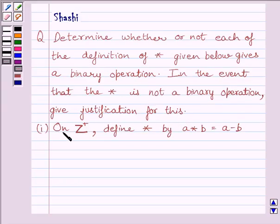First part is, on Z plus, where Z plus is the set of all positive integers, define star by A star B is equal to A minus B. Let us now start the solution. We have given A star B is equal to A minus B. We have to determine if star is a binary operation on the set of all positive integers.